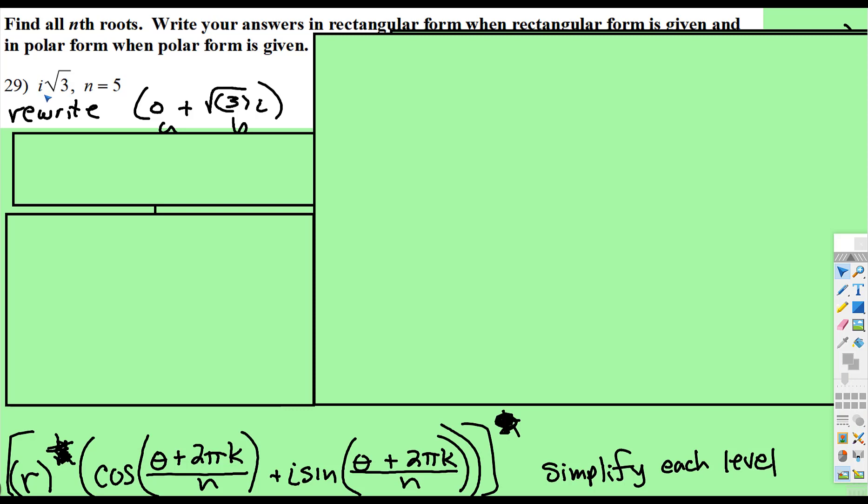Okay, so they give us i√3, which when you write it in the a + bi form is 0 for the a plus √3i for the b. Now, to use De Moivre's we need to find the r and the θ because we're going to use that theorem and then convert everything back to a + bi form.